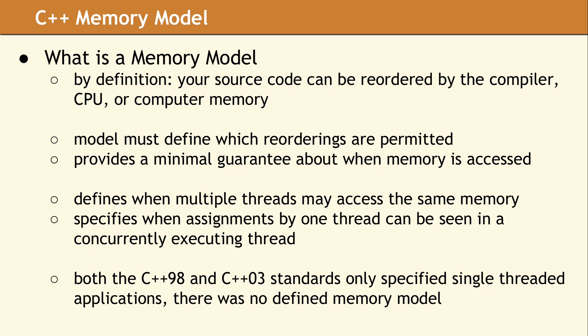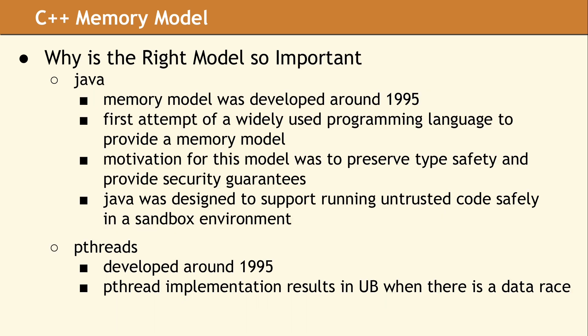The role of the memory model is to place restrictions on these reorderings, so the programmer is able to reason through the likely behavior of a multi-threaded program. The model must define when it is legal for multiple threads to access the same memory location simultaneously, and it must also describe when the changes made by one thread become visible in other threads. Before C++11 was released, the focus of the standard was only on the behavior of single-threaded applications. There was no memory model in the language. As multi-core systems became more affordable, the lack of multi-threaded support turned into a critical issue. It was decided that a memory model should be added to the language, so they started looking at Java.